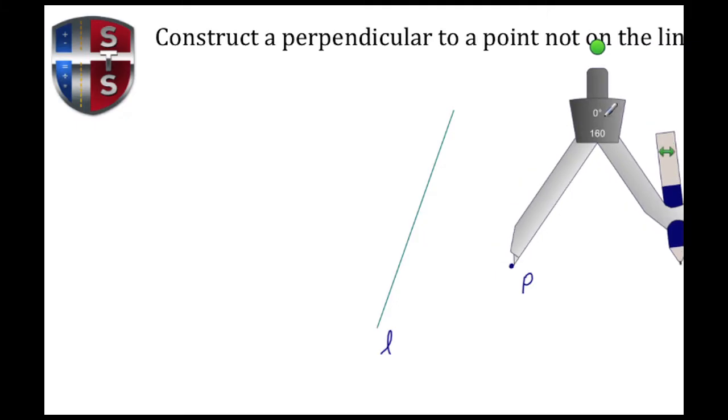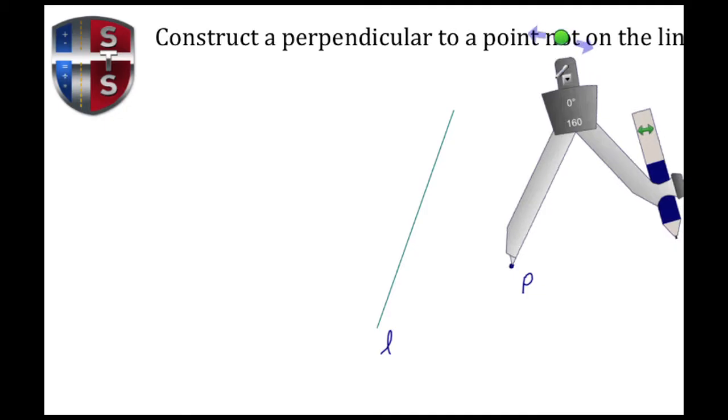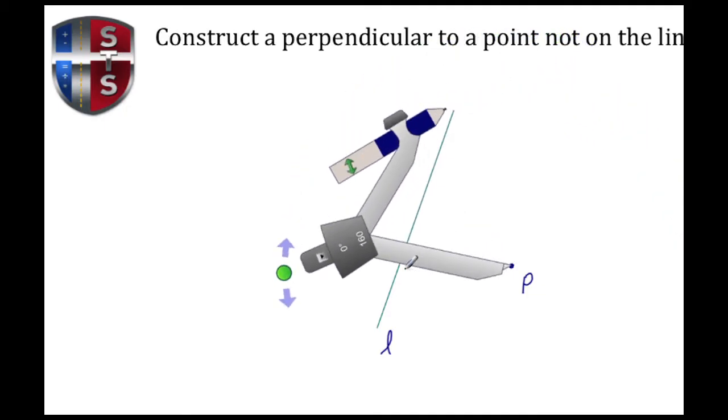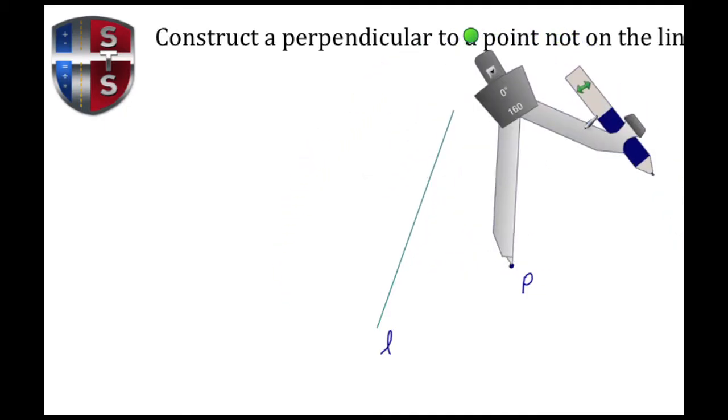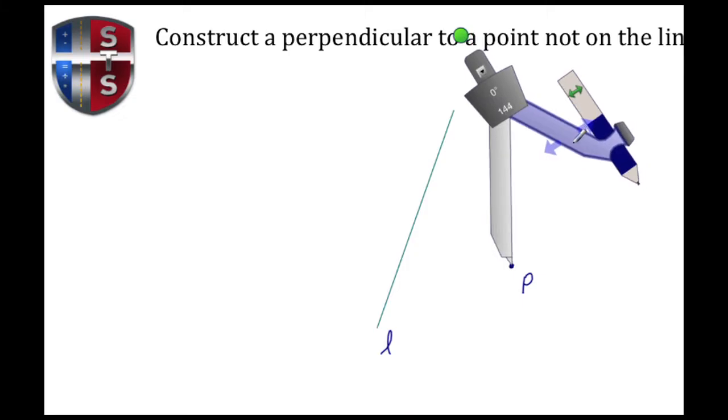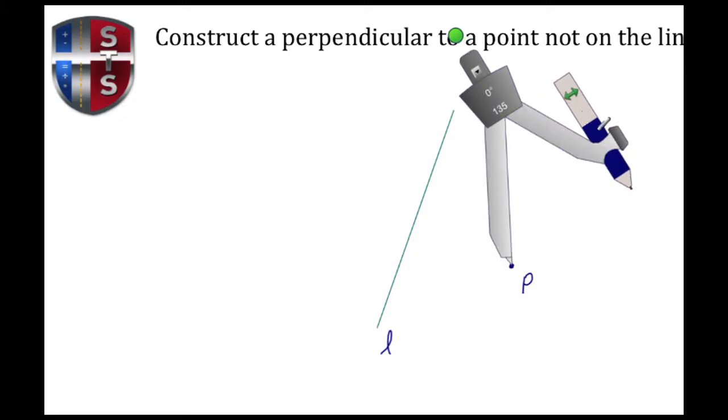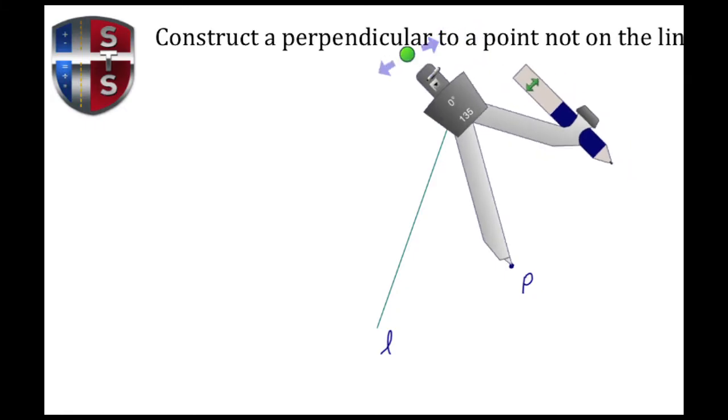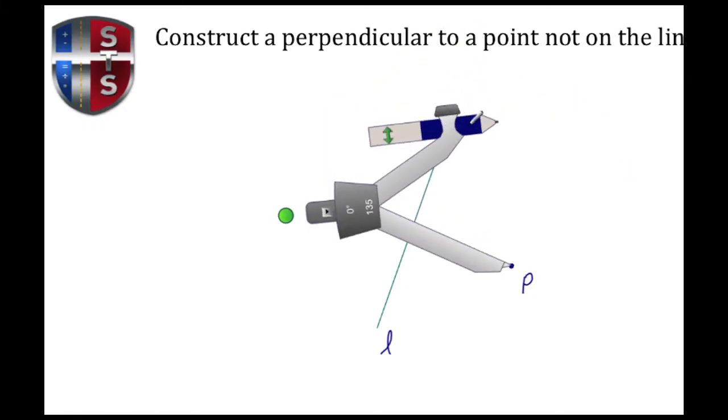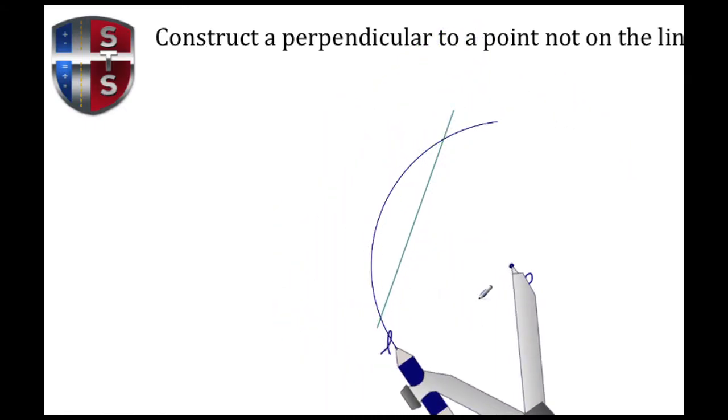Let's reorient the compass so it intersects at two places. I've set it a little too wide, so let's shorten that radius. Now let's draw the arc. Here we see the arc crosses at these two points, and I'm going to label these—let's call this position A and this point B.